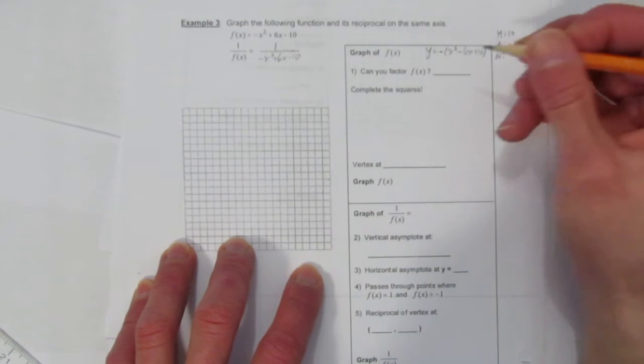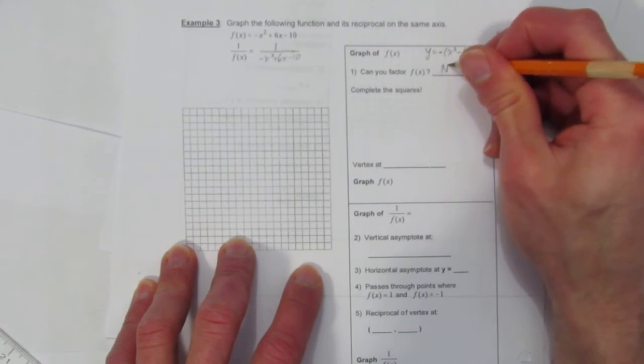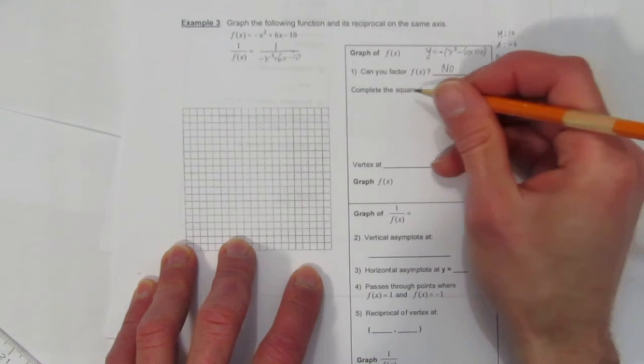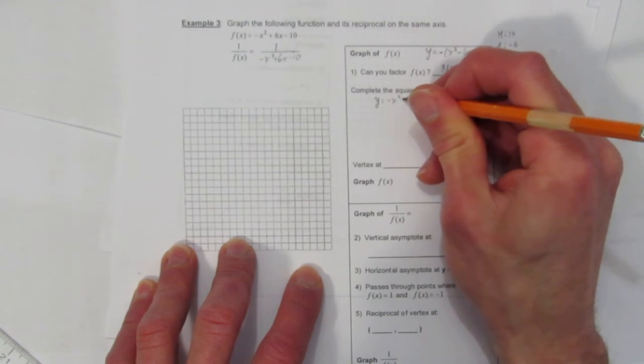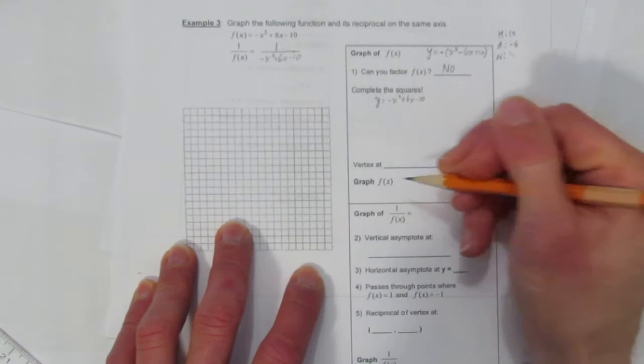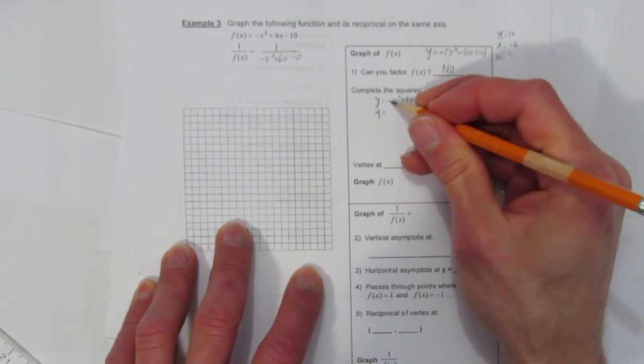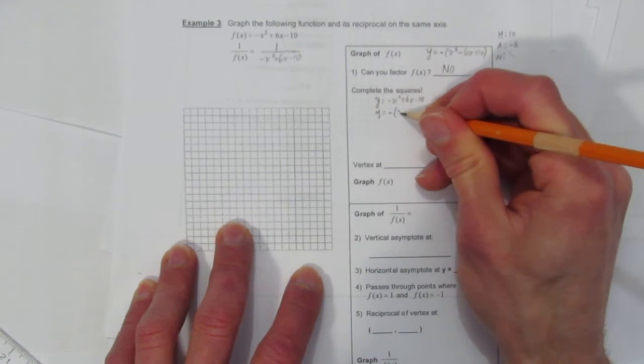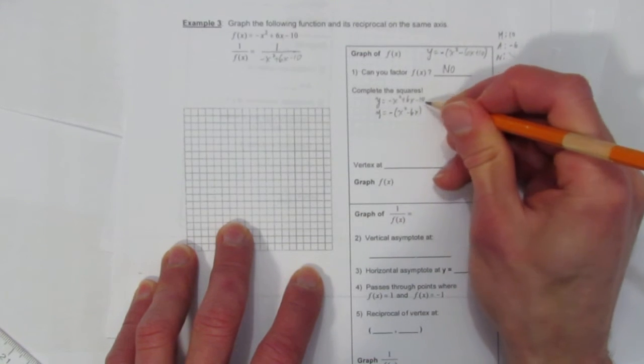Except for the common factor, which is important, but can you factor this into two brackets, two factors? No. So we're going to complete the square. And I strongly urge you to watch a video on completing the square if you don't know it already. The first step of completing the square is to pull out the a value here, but only from the first two terms. That is, you factor out the minus, and you get x squared minus 6x. Leave this negative 10 untouched.